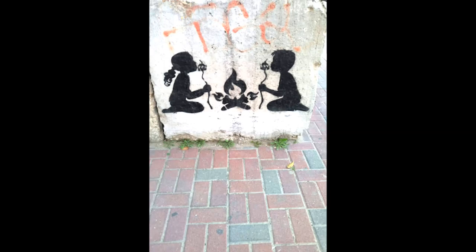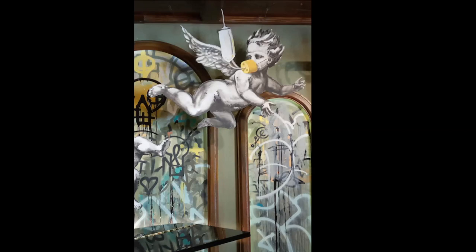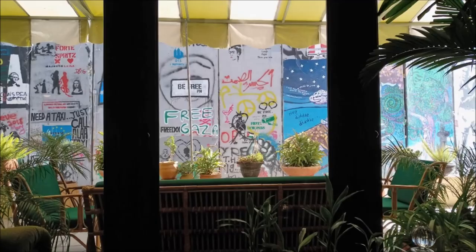And another one of Banksy's artworks is called the Walled Off Hotel, and it's billed as the hotel with the worst view in the world, as seen in this picture here.